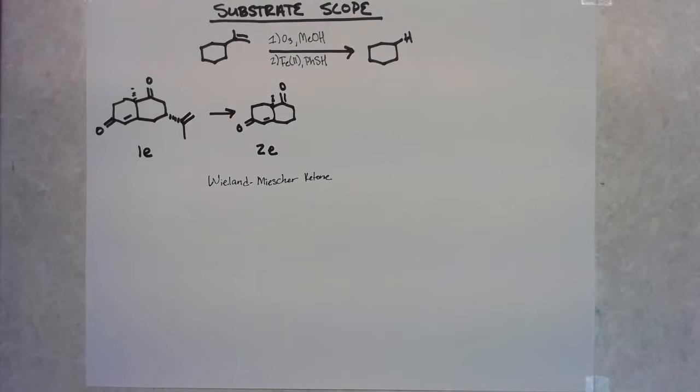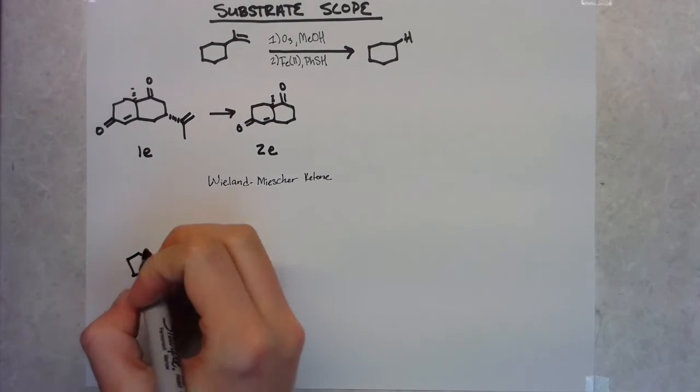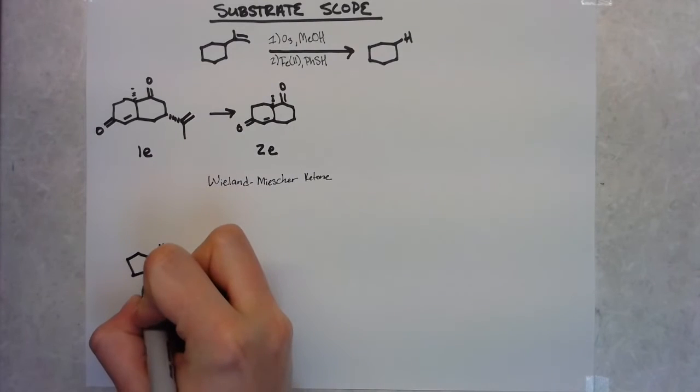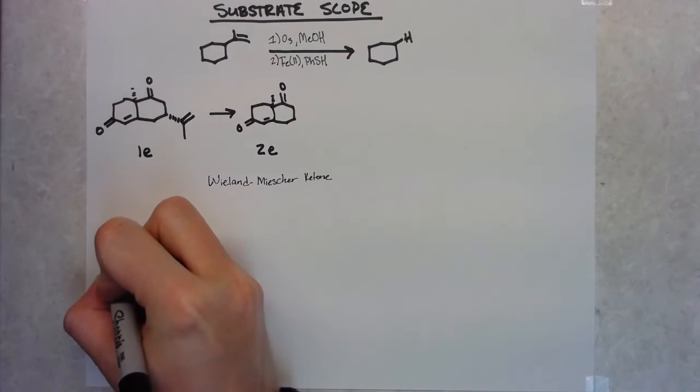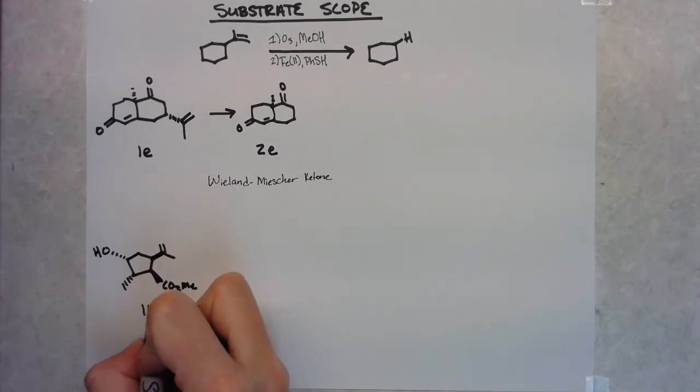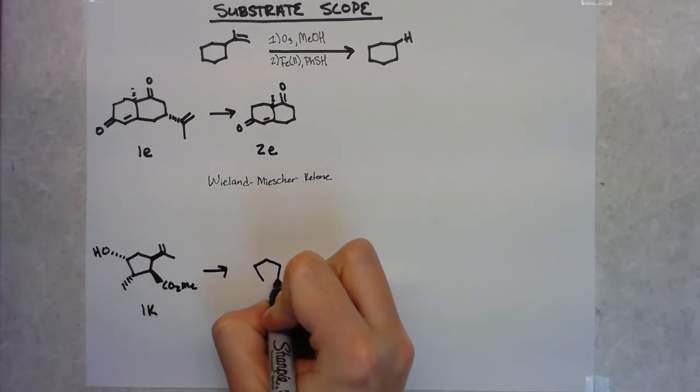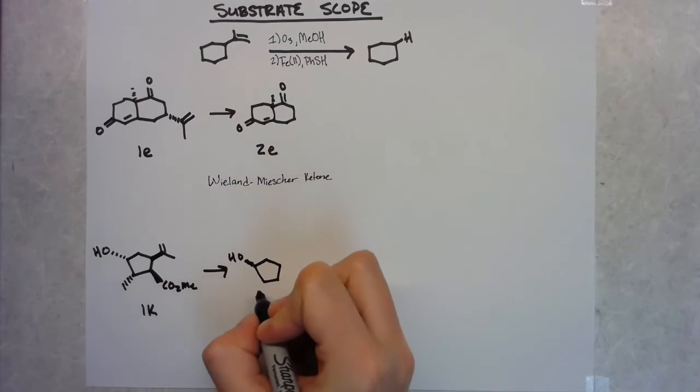This Weiland-Miescher ketone like you said Grace been used in a lot of different natural product total synthesis super important. One of the main examples that comes to mind is in Danishefsky's total synthesis of taxol. Taxol probably being the most important synthetic target in the 20th century. I don't think that's too big of a jump.